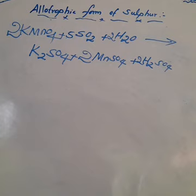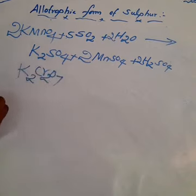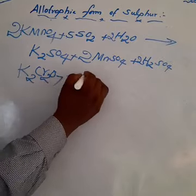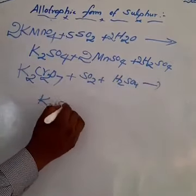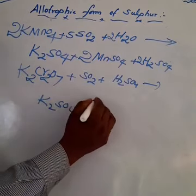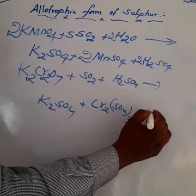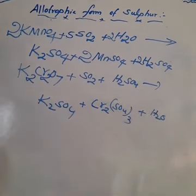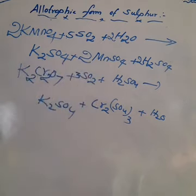Potassium dichromate (K2Cr2O7) is reduced to Cr³⁺ ions. Equation: K2Cr2O7 + 3SO2 + H2SO4 → K2SO4 + Cr2(SO4)3 + H2O. Balancing: 3 sulfate on product side → 3SO2; 2 potassium on product side → balanced.